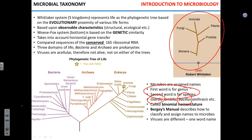Whittaker's five kingdoms were: animals, plants, fungi, protists, and Monera. Monera was bacteria and archaea. Protists were essentially single-celled eukaryotes, mostly protozoans. Fungi, animals, and plants are pretty obvious. He based his classification on structural similarity.